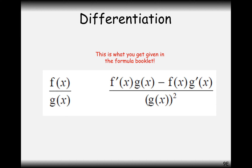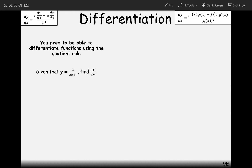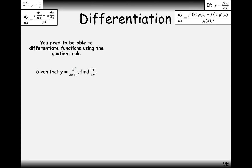It's really easy to identify when to use the quotient rule because we're going to have a fraction. In this case, y equals x over (2x + 5) — we can clearly see we've got a fraction, so we need the quotient rule. It's not going to be the product rule or the chain rule. The product rule multiplies two functions together; the quotient rule is for a fraction of two functions.